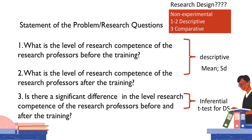With that research study, the statement of problems can be drafted this way. The first question asks: what is the level of research competence of the research professor before the training? The second asks about after the training. These two research questions can be processed using descriptive statistics — we will compute the mean and the standard deviation. For the third question, to test our hypothesis, it can be stated as: is there a significant difference in the level of research competence of the research professor before and after the training? This calls for inferential analysis, specifically the t-test for dependent samples or paired t-test.